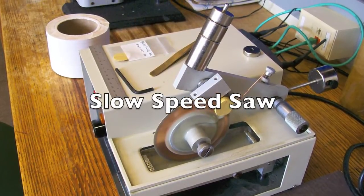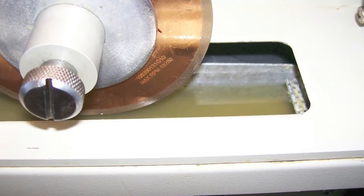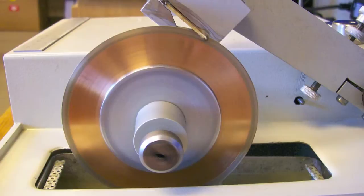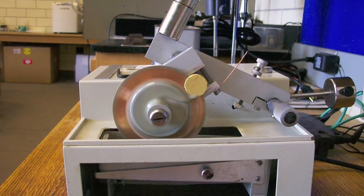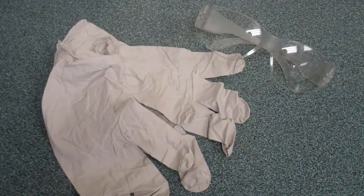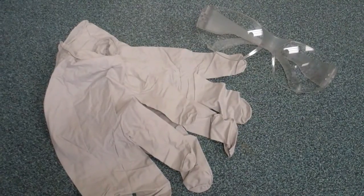The slow speed saw is the instrument used to cut samples for the various thermal and mechanical devices. The instrument consists of a variable speed motor blade and an oil bath. Be sure to wear proper personal protective equipment including gloves, goggles, and a lab coat.